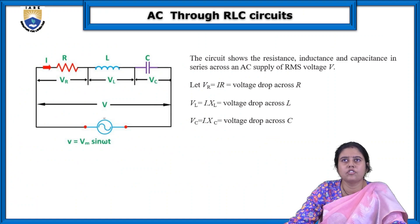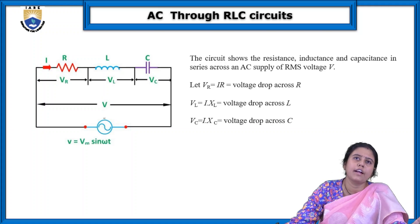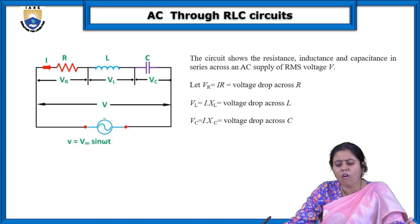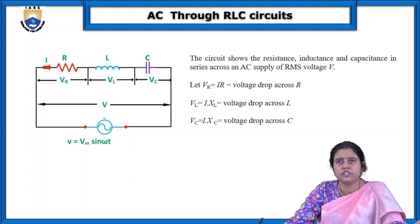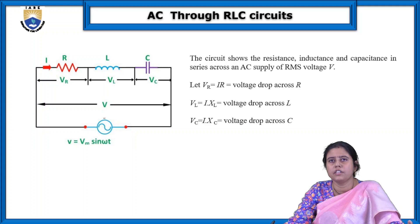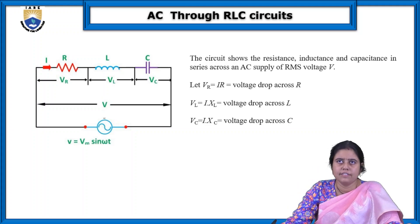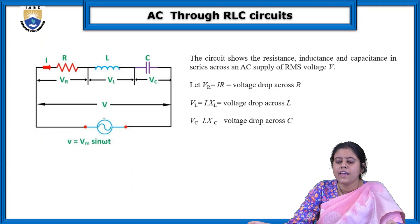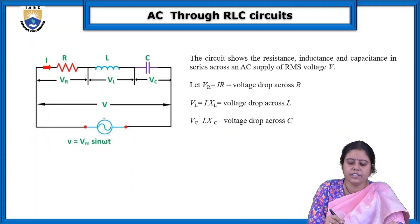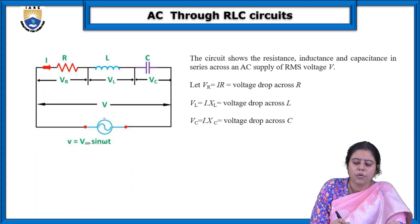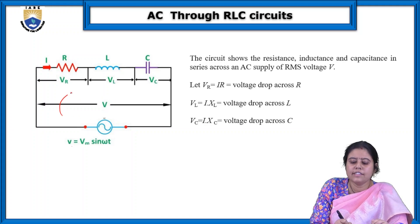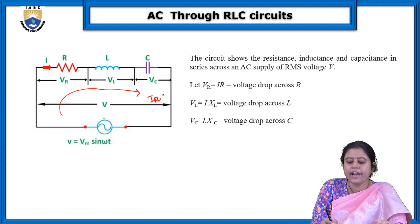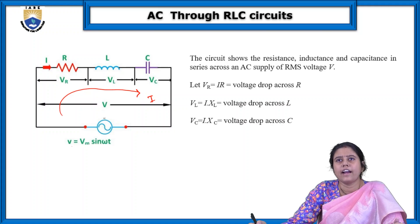First we will discuss AC applied to an RLC circuit — a quick revision of what happens when we connect AC with an RLC circuit. We already discussed in the previous lecture about AC through different types of circuits. Today we will discuss AC through the RLC circuit. This circuit shows resistance, inductance, and capacitance in series across an AC supply of RMS voltage V.